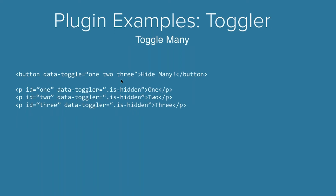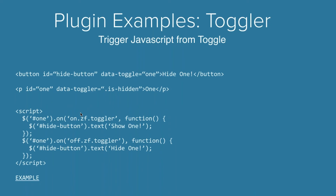You can also have a toggle trigger multiple togglers at the same time — that's a mouthful. In this example, this button is toggling three different things on the page. Just by having space-separated IDs, you can toggle all of them at once.